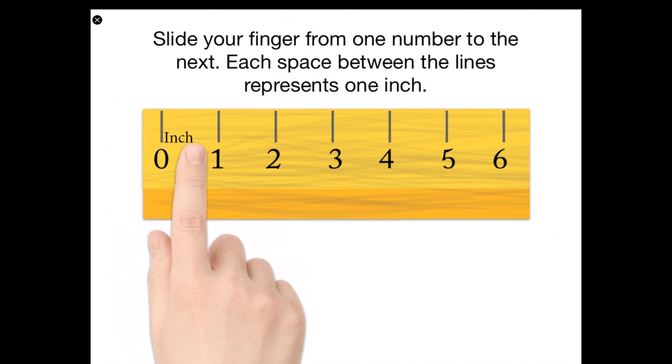From zero to one is one inch. From one to two is one inch. From two to three is one inch. From three to four is one inch. From four to five is one inch. And five to six is one inch. And so forth.